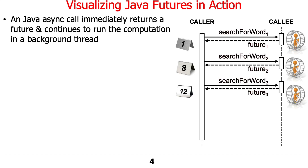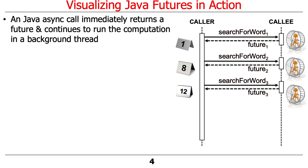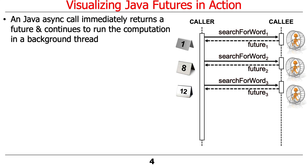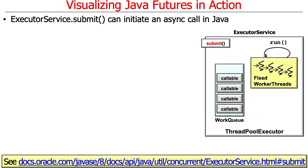Basically what happens with futures is when you invoke an operation, when you submit something that involves futures, the callee returns the future right away, continues to run the computation in the background thread, and then the caller will do something with the future it receives in response to making the asynchronous call.